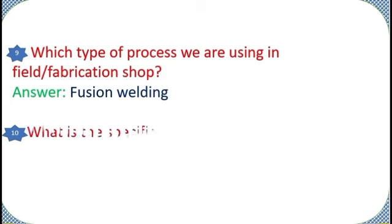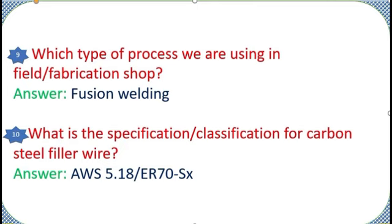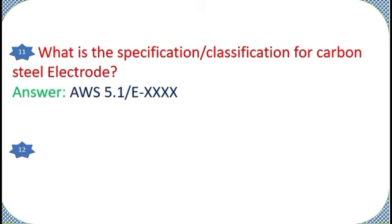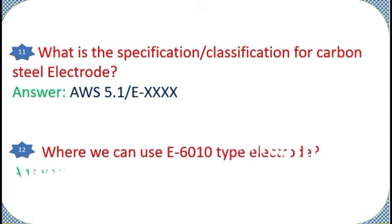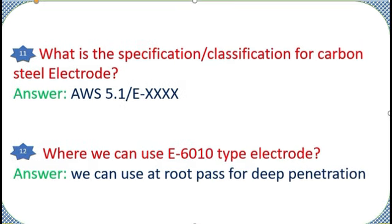Which type of process we are using in field slash fabrication shop? Answer: Fusion welding. What is the specification slash classification for carbon steel filler wire? Answer: AWS 5.18 slash ER70SX. What is the specification for carbon steel electrode? Answer: AWS 5.1 slash EXXXX. Where can we use E6010 type electrode? Answer: We can use at root pass for deep penetration.